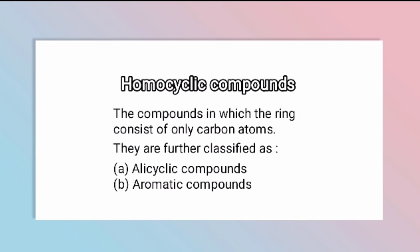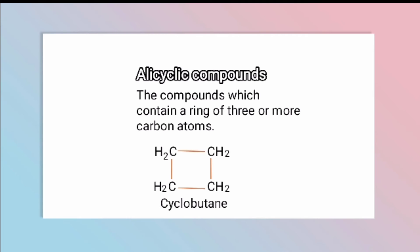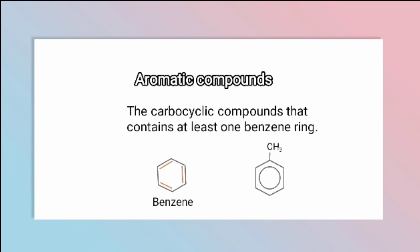Alicyclic compounds are homocyclic compounds which contain a ring of three or more carbon atoms. They form a ring structure. For example, we have a cyclobutane structure which has 4 carbon atoms arranged in a ring form.